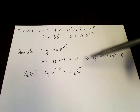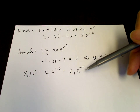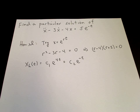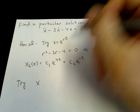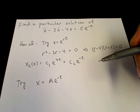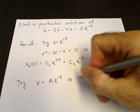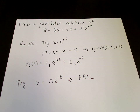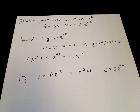The difficulty is that the inhomogeneous term — a constant times e to the minus t — is also a solution of the homogeneous equation. So if we try an ansatz of x equals a constant times e to the minus t and substitute into the left-hand side, because e to the minus t is a solution of the homogeneous equation, we will fail. We get 0 equals 5 times e to the minus t, telling us this ansatz doesn't work. The particular solution is not of the form of a constant times e to the minus t.